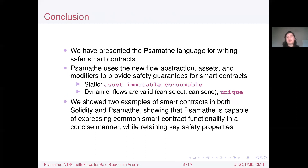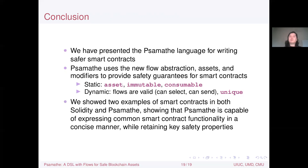In conclusion, we presented the Samathi language for writing safer smart contracts. Samathi uses a new flow abstraction, asset modifiers, and type quantities to provide safety guarantees. Statically, we can guarantee assets will not be accidentally lost or duplicated, immutable values won't change, and consumable assets can only be consumed via a consume construct. Dynamically, we ensure flows are valid — values can be selected and sent to their destination — and the unique modifier is enforced. Samathi expresses smart contract functionality concisely while retaining the safety properties we need.